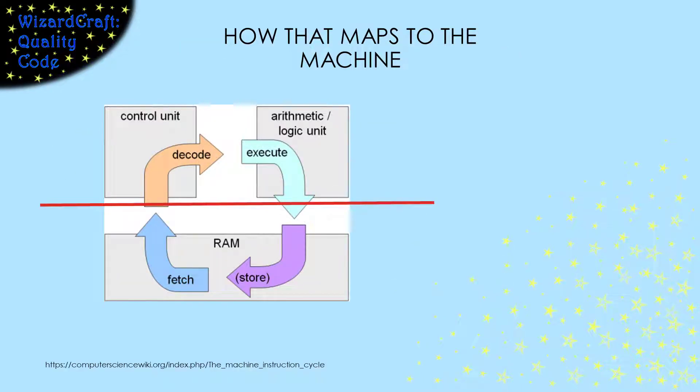This cycle is so innate to how the CPU behaves that the CPU actually has components related to it. The CPU has a control unit that does the decoding of the instruction, and an arithmetic logic unit that does the Execute. So the CPU is the part of the diagram above the line. The CPU has to talk with the RAM, or the memory, to store the information and to fetch the next instruction.